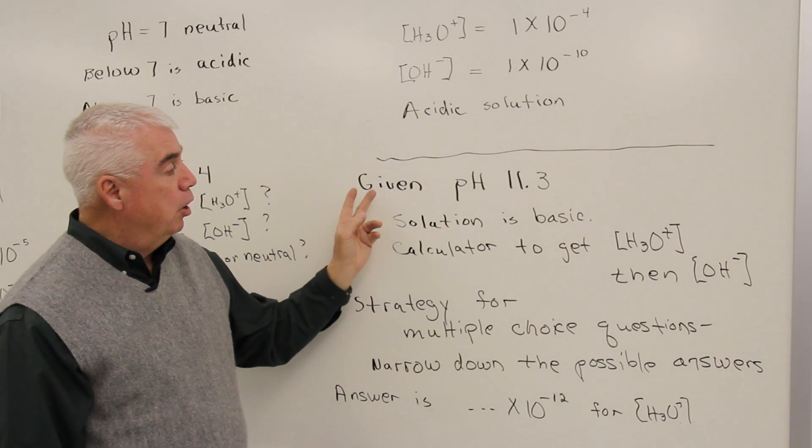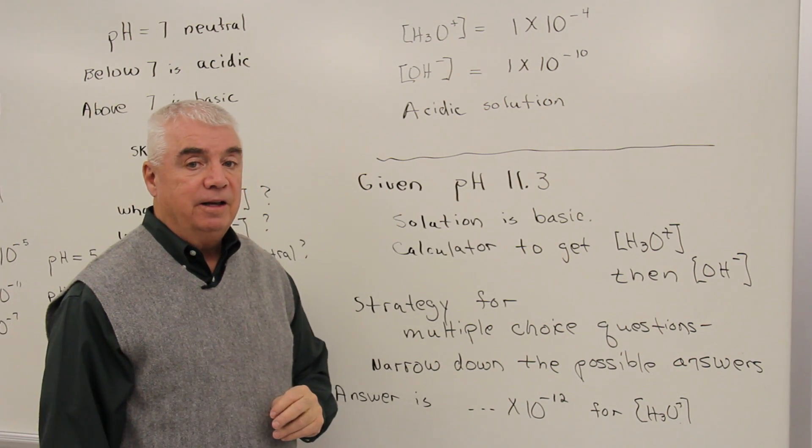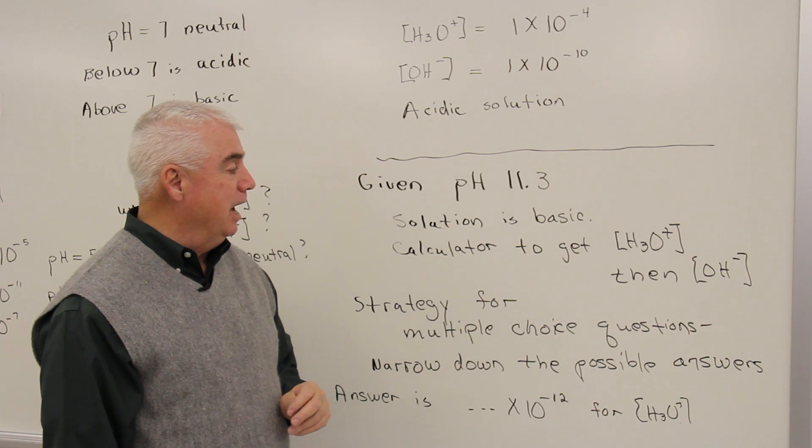It's below 7. It must be an acidic solution. Here's a little bit harder problem. Given a pH of 11.3, let's see what we can find out.